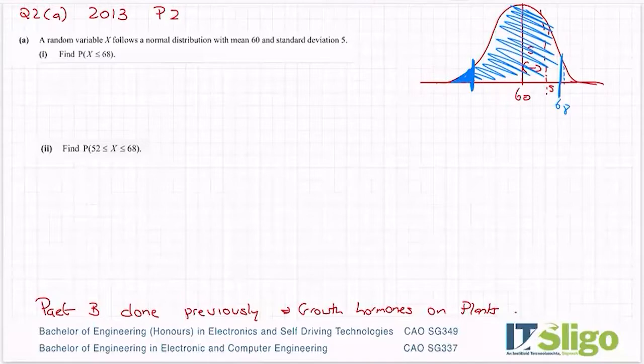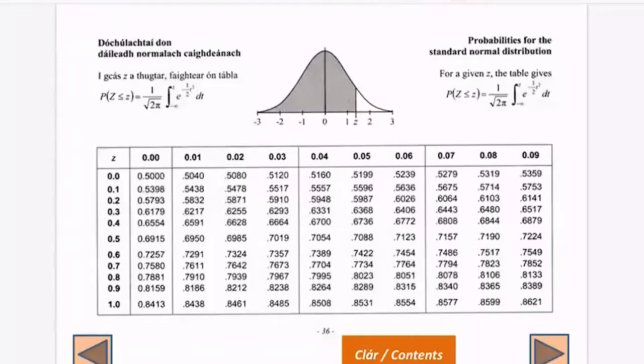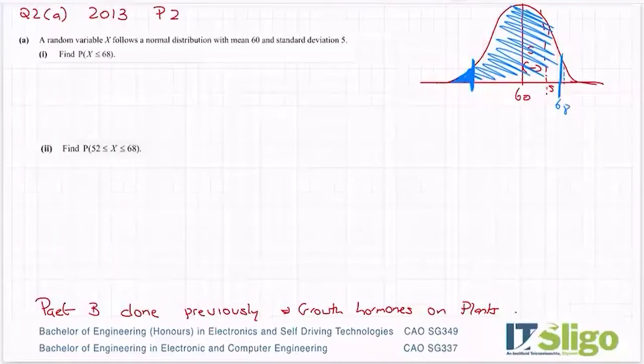So the easiest way to do this is to normalize the data, figure out how many standard deviations you're away, and then just look up the equivalent z score. So z being how many standard deviations you're away.